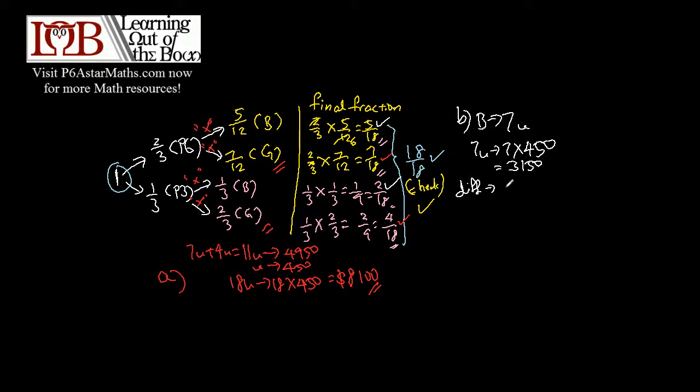You take 4,950, which is from here or from the question itself, minus 3,150, which equals 1,800. And this is the answer for part B.